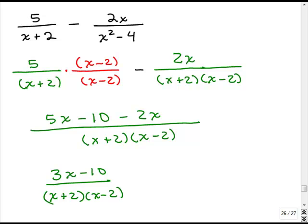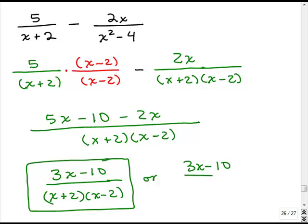over x plus 2 times x minus 2. Now notice I left the denominator factored. Usually it's easier to leave the denominator factored because the next step after you simplify the numerator is to see if you can factor and cancel with anything in the denominator but in this case 3x minus 10 doesn't factor so this is your final answer. Now if you want you can multiply out the denominators at the end. If you prefer to write that as x squared minus 4 that's perfectly fine.